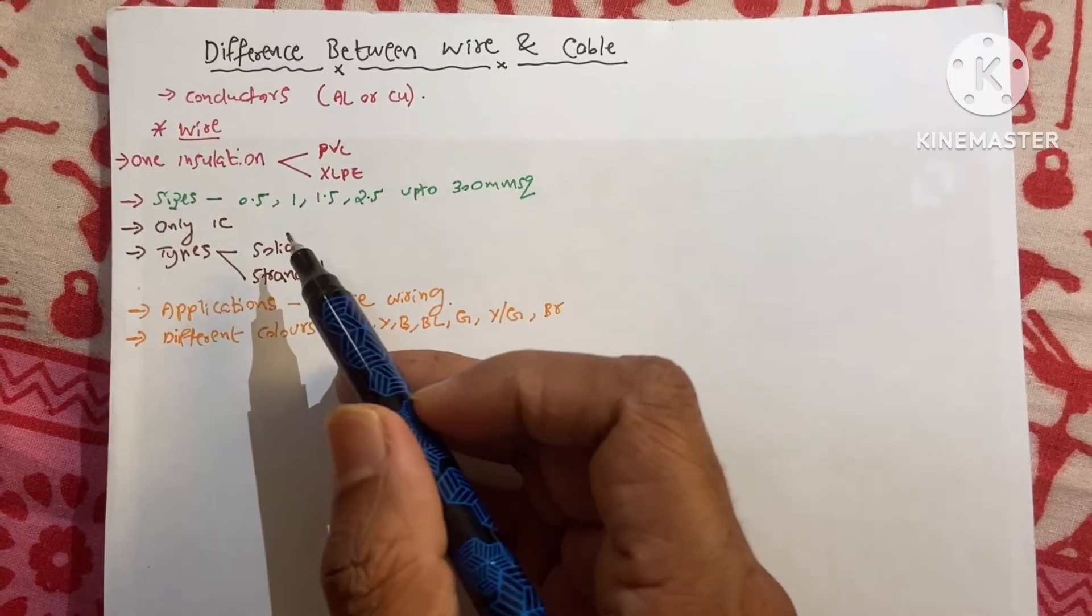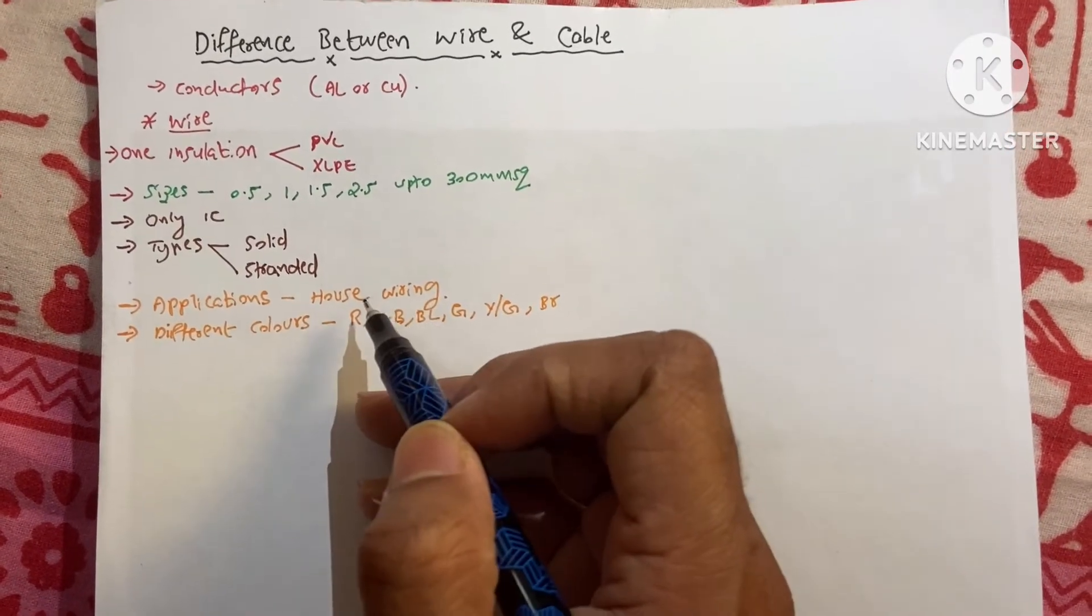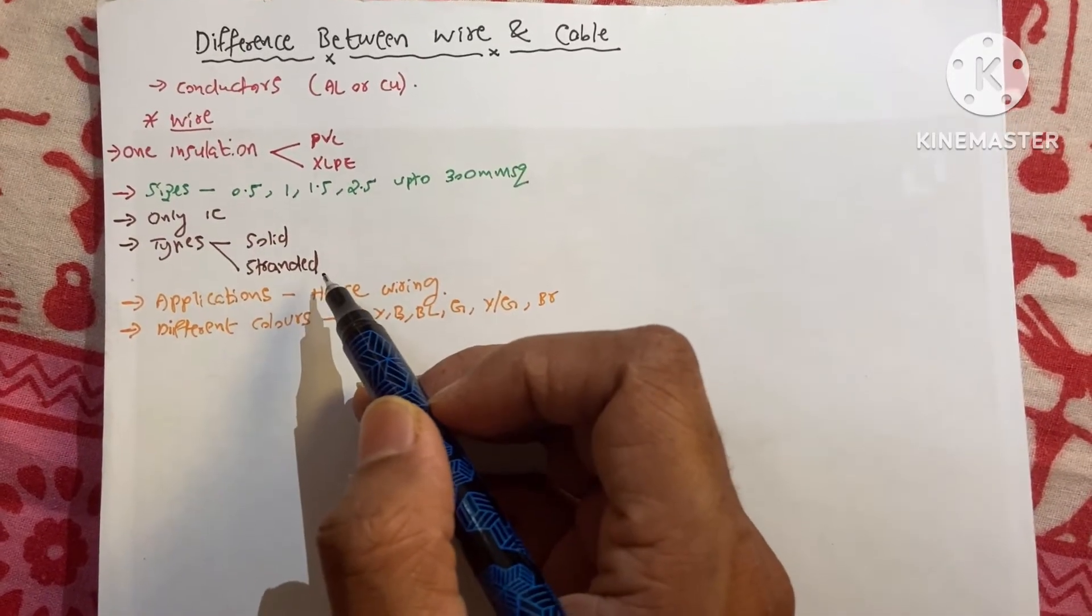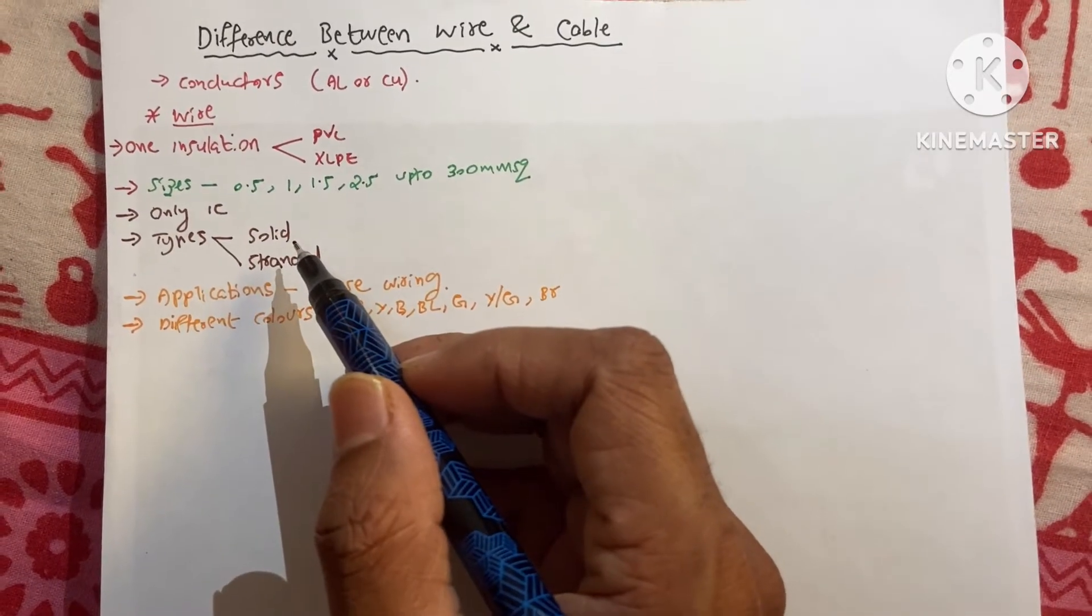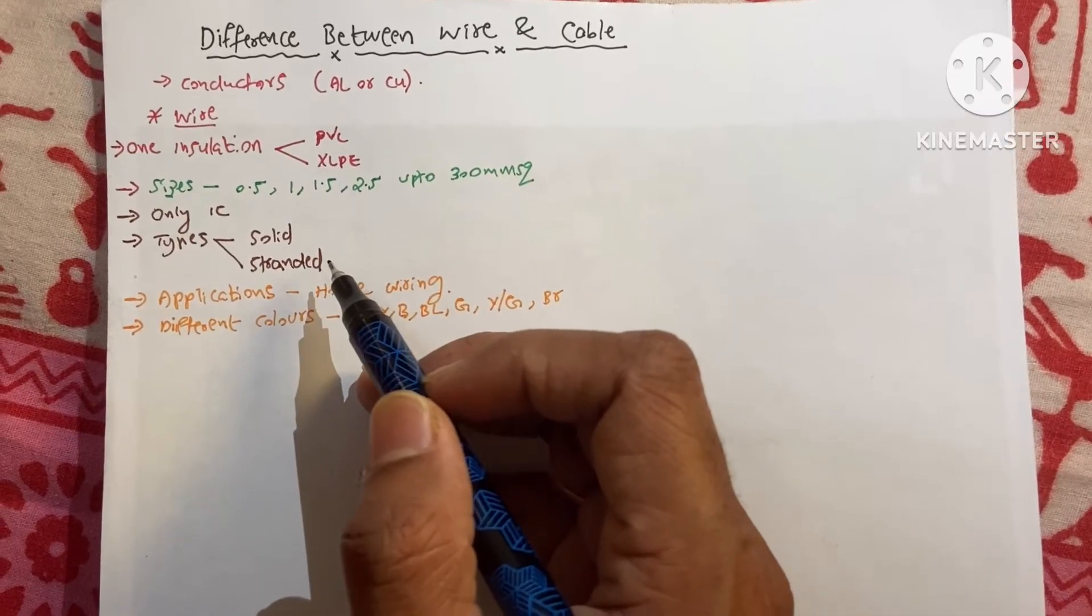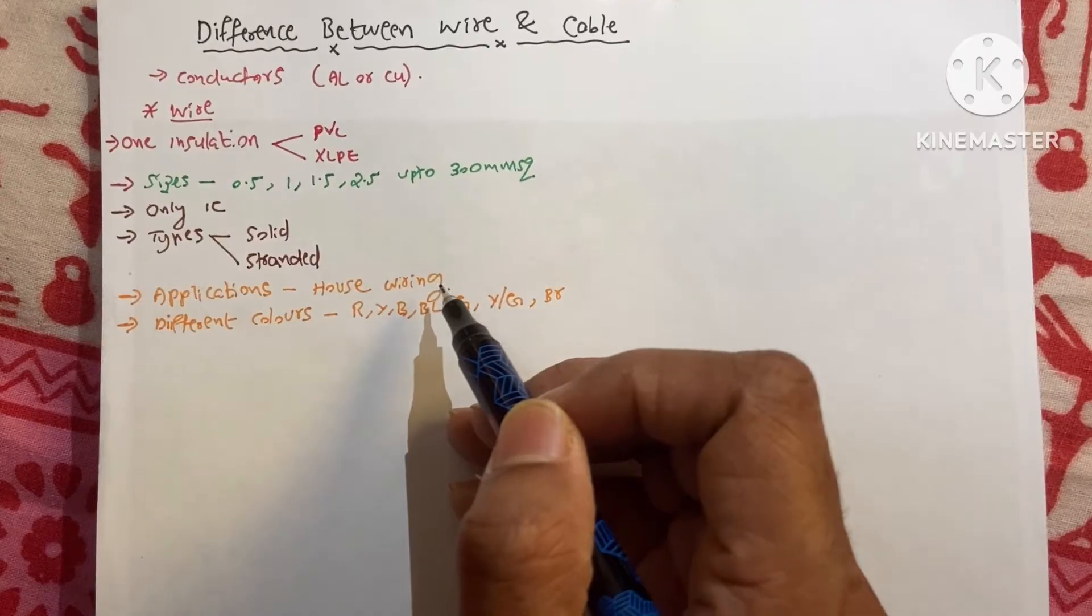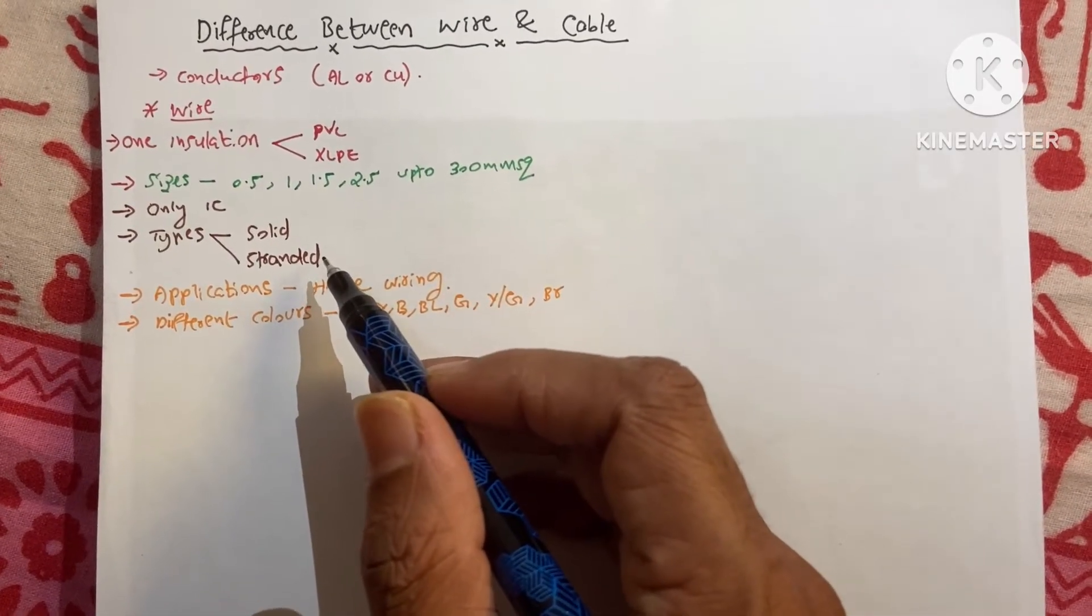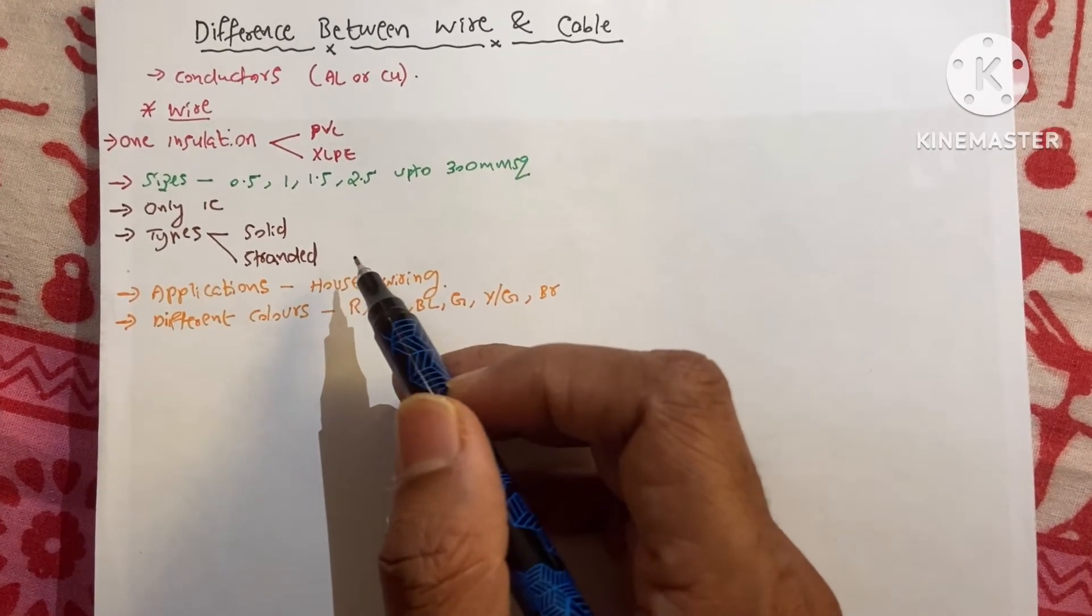And the next one is the applications. We use these wires for our house electrical wiring. In most of the houses, we use the stranded wires. In old times, we use the solid conductors. But after the invention of this stranded one, we use mostly the standard wires for the house wiring because of its flexibility.